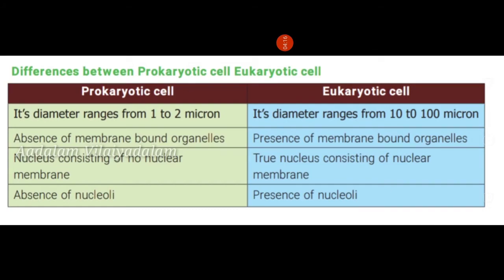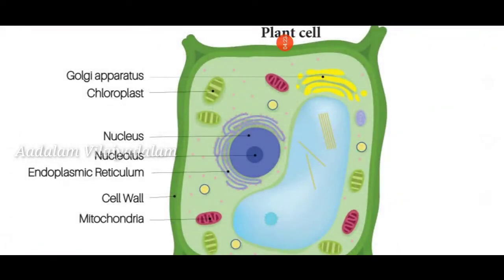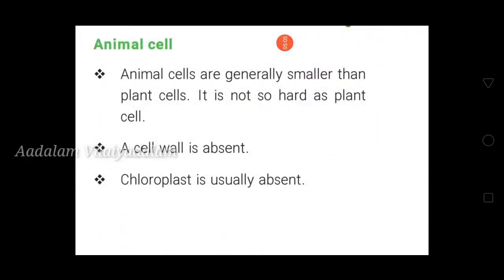Plant cells are usually larger in size and hard in nature. Plant cells have a cell wall in addition to their cell membrane. Plant cells have chloroplasts which contain chlorophyll. Plant cells also have large vacuoles, and centrioles are absent. The parts of a plant cell include Golgi apparatus, chloroplast, nucleus, nucleolus, endoplasmic reticulum, cell wall, and mitochondria.